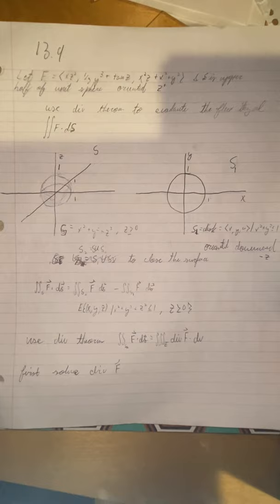Hi, I'm doing problem 13.9. Let f equal xz squared, one third y cubed plus tangent z, x squared z plus x squared plus y squared, and let s be the upper half of the unit sphere x squared plus y squared plus z squared oriented in the positive z direction. Use the divergence theorem to evaluate the flux integral f dot ds.